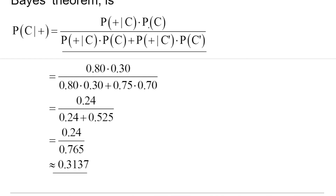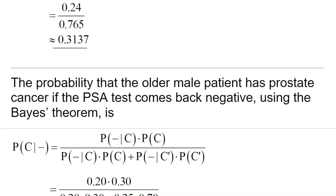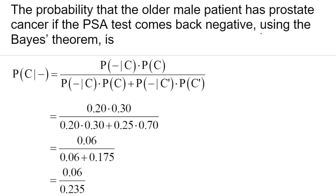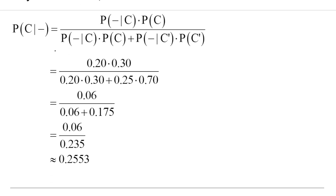We need to change the value of the probability of event C and the probability of the complement of event C. The conditional probabilities remain the same as in Part A. Now, for the second part of Part C, we need to find the probability that an older male patient has prostate cancer given that the test comes back negative. Again, using Bayes' theorem and putting values into the formula, we get 0.2553.